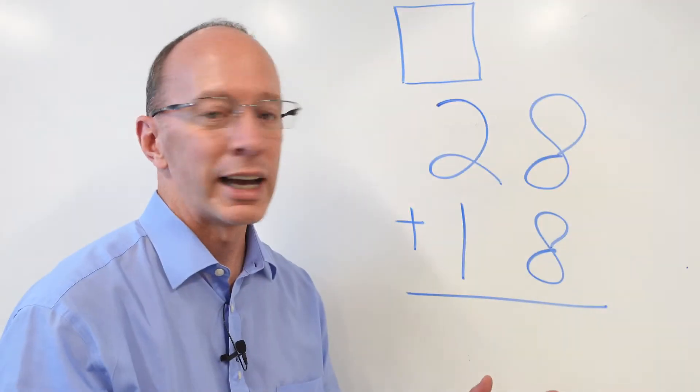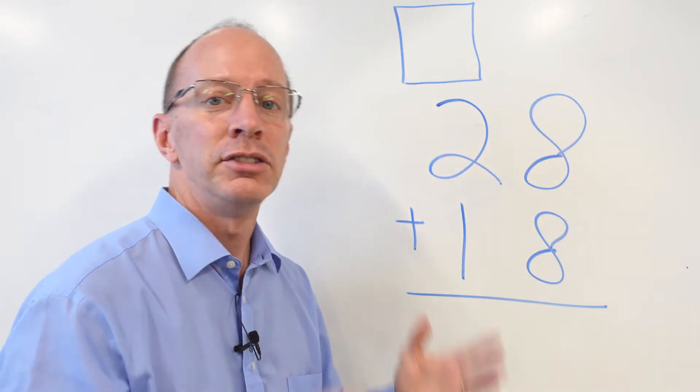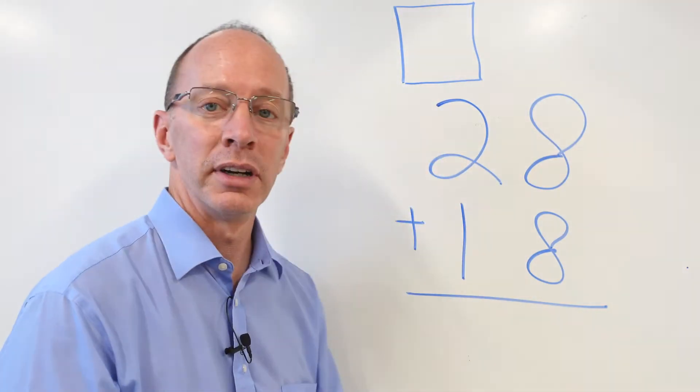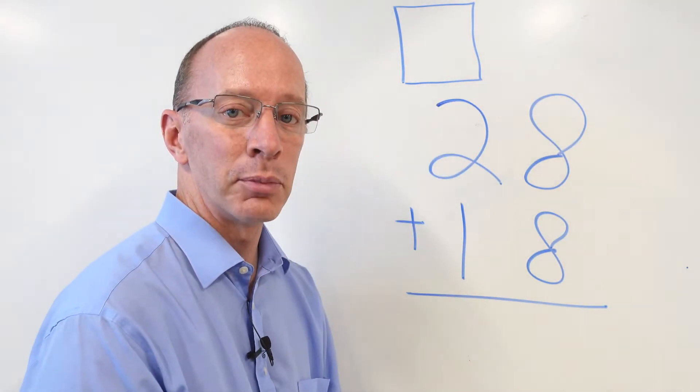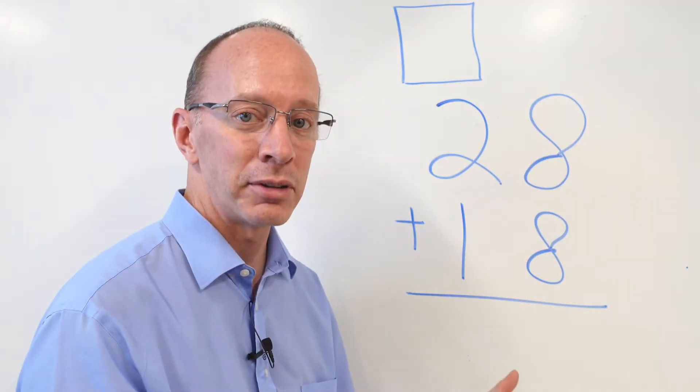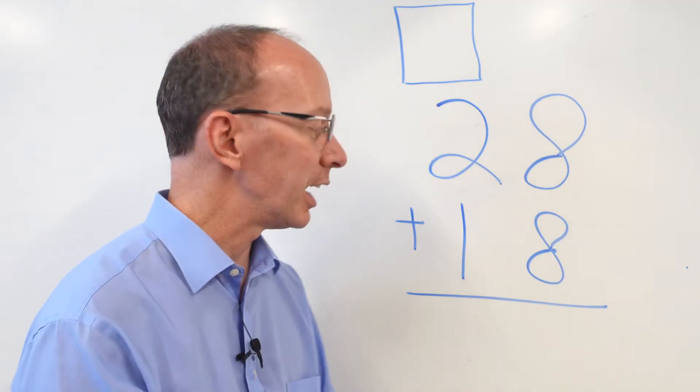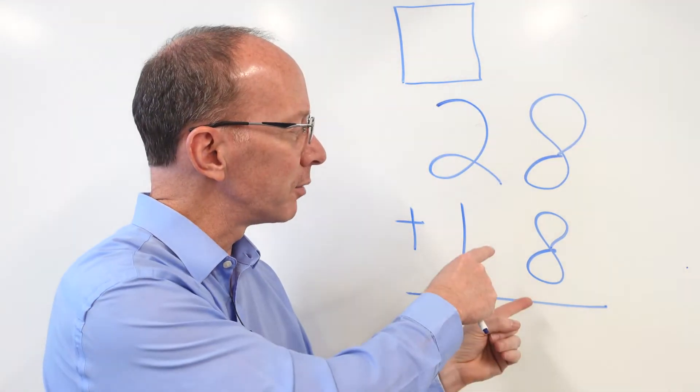All right, we got our next problem. Now, remember, when you see a box above here, you don't always need to put a number in there. So sometimes I've got to try to trick you. But you don't always need to put a number in there. For instance, if I added two plus three, it's not going to be a double-digit number. Two plus three would be five. So I wouldn't have to put anything in there. But let's go ahead and do this problem right now.